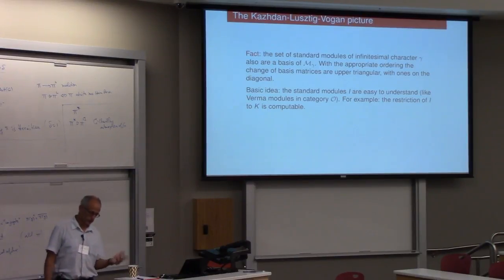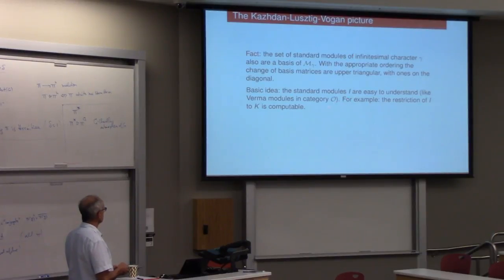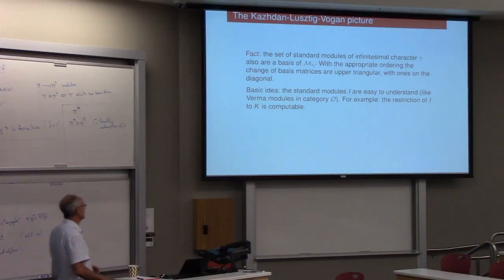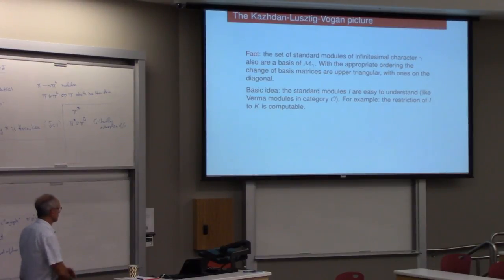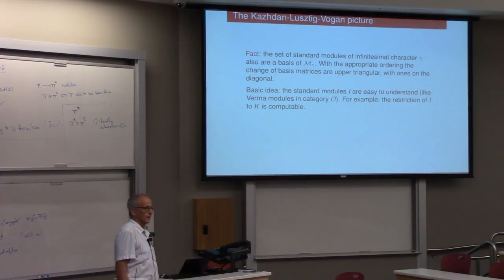When you study category O, in some sense, the basic objects are the full Verma modules, which are large, but constructed in an elementary way, just by some tensoring for operation. And the standard modules that we're talking about here are analogous to Verma modules in category O. And just like a Verma module has an elementary weight space decomposition, these standard modules, they have nice formulas. They're easy to, it's easy to compute the restrictions to K. You can write out their K multiplicities. So, so these standard modules are large, but more, in some sense, elementary objects.